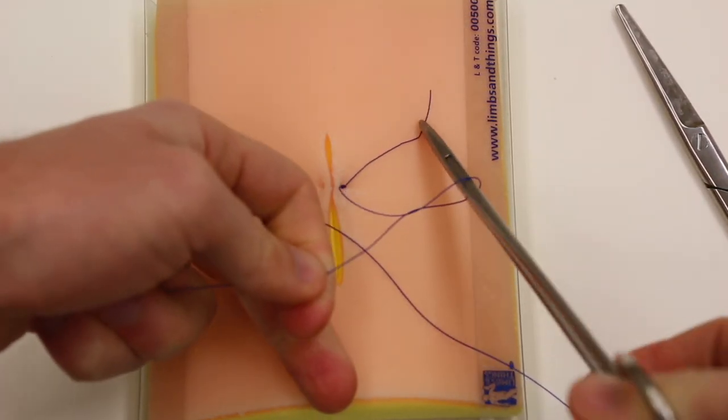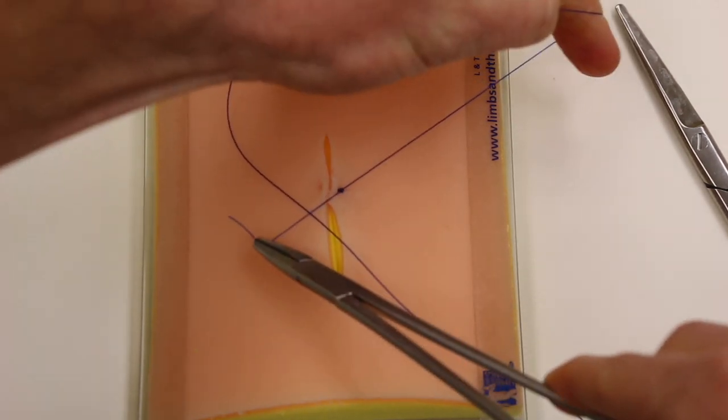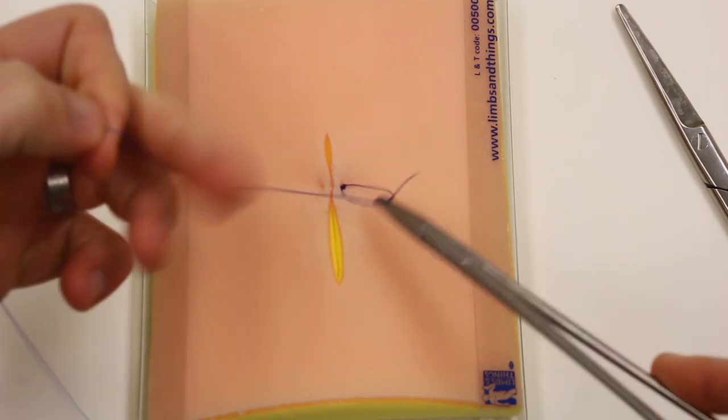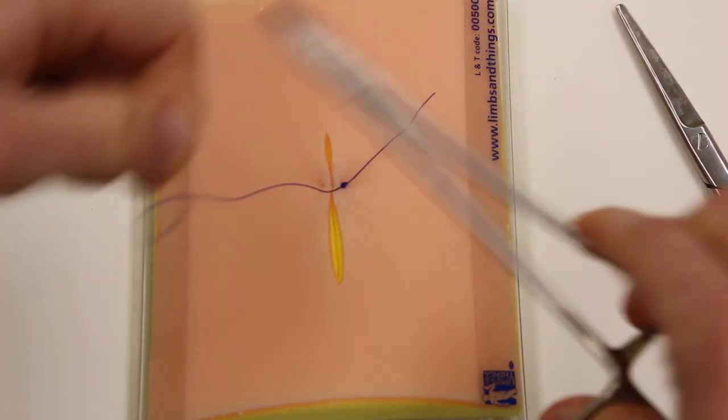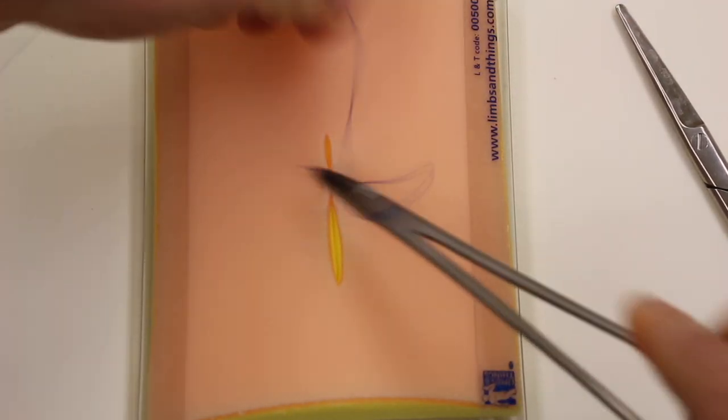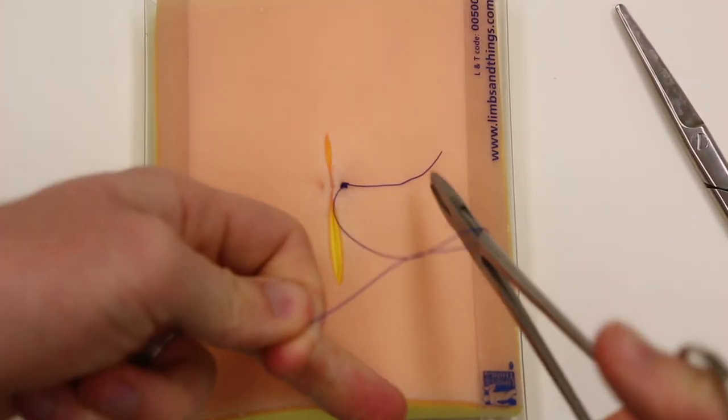And then you're going to want about six knots with these synthetic monofilaments. They tend to walk out the knots too. So it's three, four, five, and six.